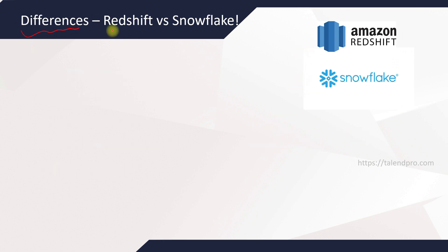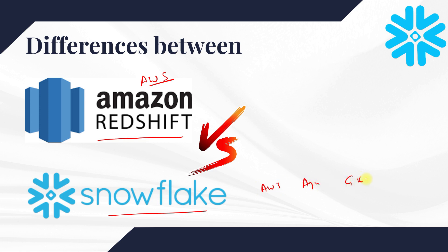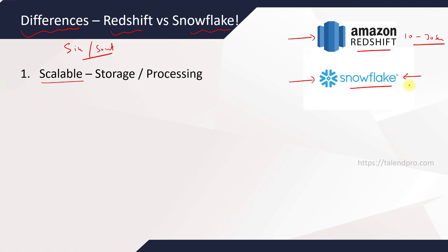Now let's look at the differences between Redshift and Snowflake. AWS offers Amazon Redshift, while Snowflake is platform-independent — the cloud vendor can be AWS, Azure, or GCP. The first important difference is scalability. Both scale in and scale out, but it is much faster in Snowflake. In Redshift, scaling typically takes between 10 to 30 seconds when demand increases or decreases, whereas in Snowflake it is practically instant — Snowflake claims scaling takes less than just a few seconds.